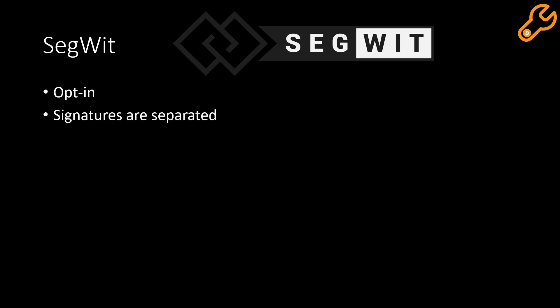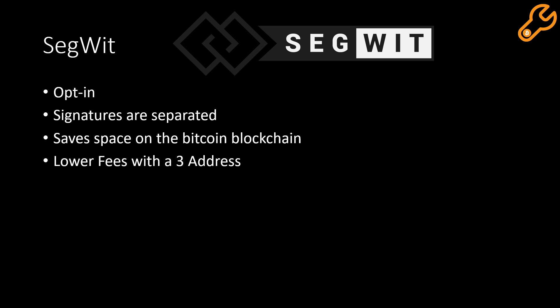Now, what is SegWit? First, it's opt-in, so you don't have to use it — if you want, you could choose to just use legacy addresses. The reason why SegWit is cheaper is because the signatures are separated. Normally in legacy address transactions, your signature and all the other data is in one whole transaction, but with SegWit addresses the signature is separated, which saves space on the Bitcoin blockchain so you can fit more transactions into one block.